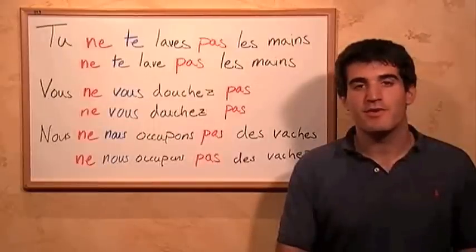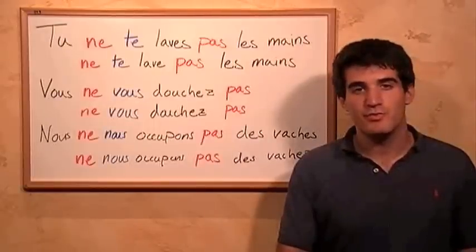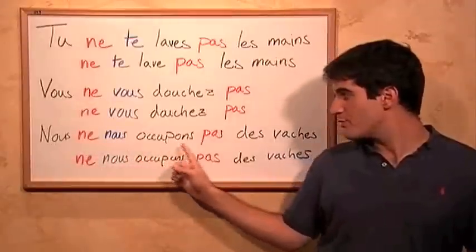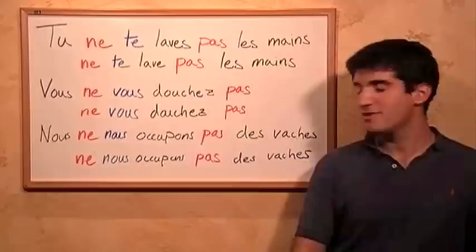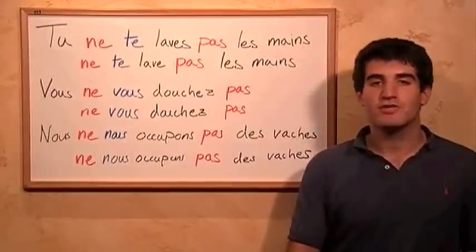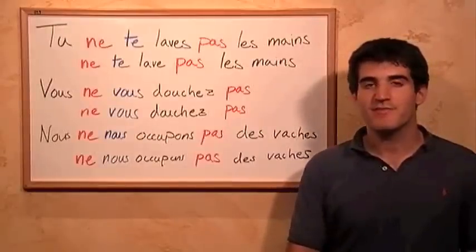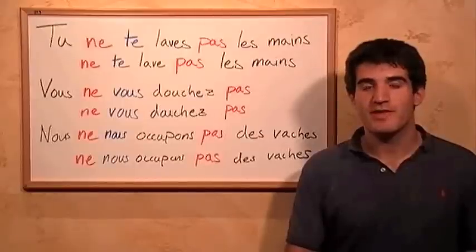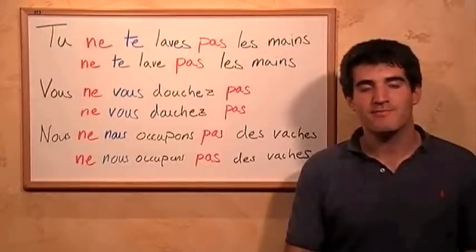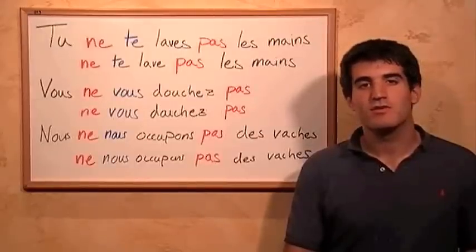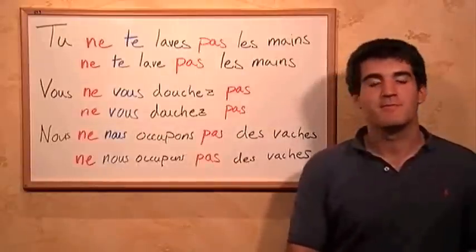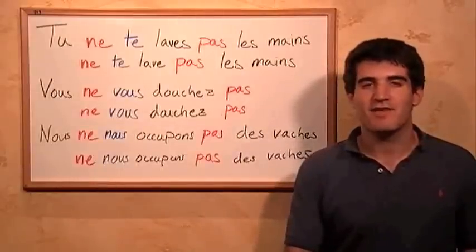If the subject is nous, we can apply the same process. So with a sentence like nous ne nous occupons pas des vaches — we don't take care of the cows, vache being cow and s'occuper meaning to take care of — we can say ne nous occupons pas des vaches. Let's not take care of the cows.